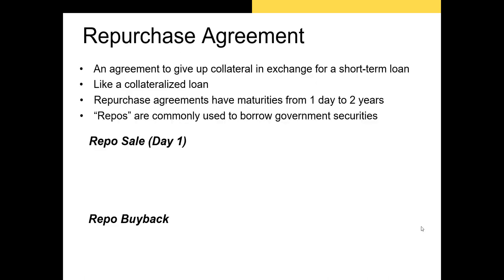Let's talk more about repurchase agreements, because of all those assets, this might be the trickiest to understand conceptually. A repurchase agreement is an agreement where one party agrees to give up collateral in exchange for a short-term loan — maybe a one-day or overnight loan, or maybe a ten-day loan. Typically, repurchase agreements have maturities all the way up to maybe two years, but they're generally considered short-term. A huge number of repos have a time to maturity of just one day. Repos are very commonly used to borrow government securities.